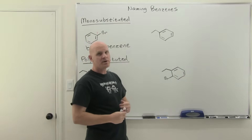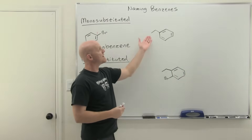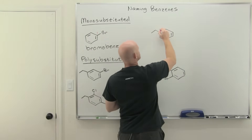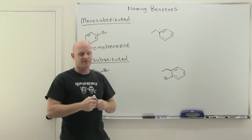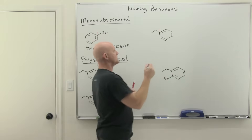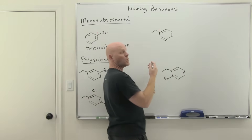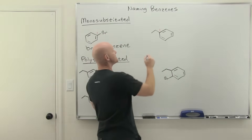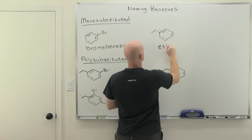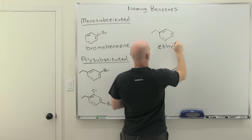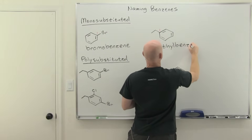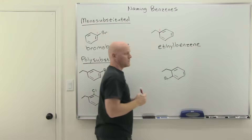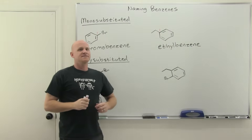Same thing here — instead of having a bromo as our substituent, we now have an ethyl group, but it's still attached to carbon number one of the benzene. We don't say one-ethylbenzene; we just say ethylbenzene — one big word. That's mono-substituted benzene.